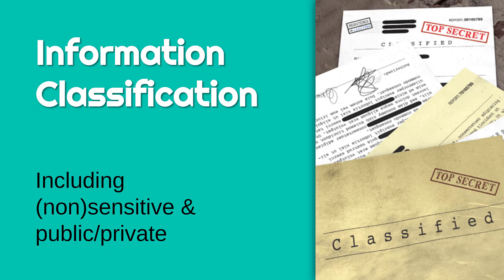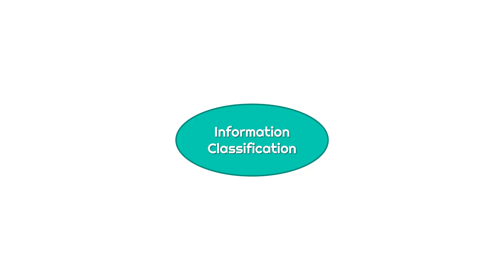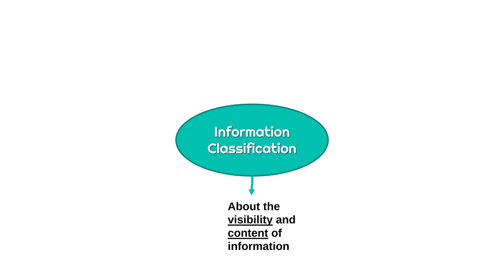I'm going to go through a few different types of information classification. If you come across the phrase 'information classification' in an exam situation, it's looking for you to talk about one of these following terms. The purpose of classification is all about visibility but also the content of information. Visibility is about who can see the information, and content is about what the information includes. A lot of information will have several classifications.